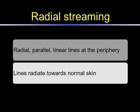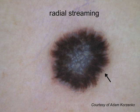Radial streaming is one type of streak. Radial streaming consists of radial, almost parallel, linear lines at the periphery of the lesion. This is an example of a Spitz nevus manifesting radial streaming around its entire perimeter.